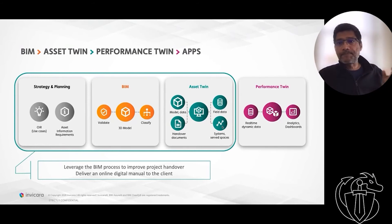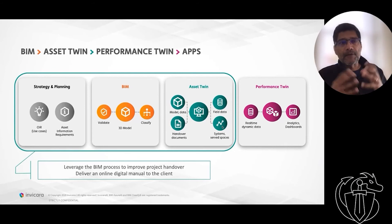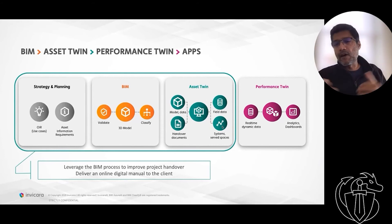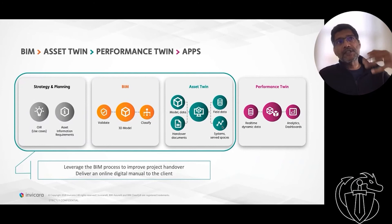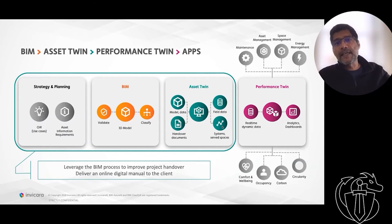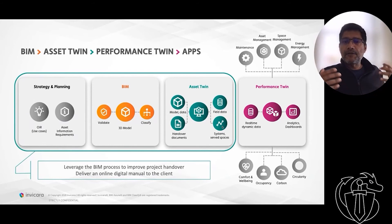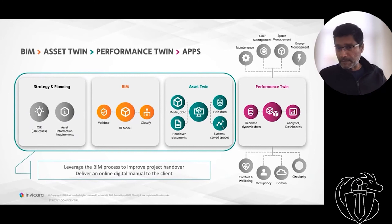As an asset twin, it's an excellent way to add value to the BIM process and deliver something to the asset owner to operate the facility. Then you can integrate the real-time information. The performance twin is a step beyond an asset twin. While an asset twin is a digital manual of a facility, the performance twin — just like maps giving you information about traffic, roads, hotels, and occupancy — starts giving you real-time performance data, drives analytics, drives anomaly detection, and drives all of the outcomes you need to operate assets effectively. So a digital twin is a process, not a product. It's a set of tools and solutions that you create, but it's founded on data — on good information management during the design and development process of an asset.